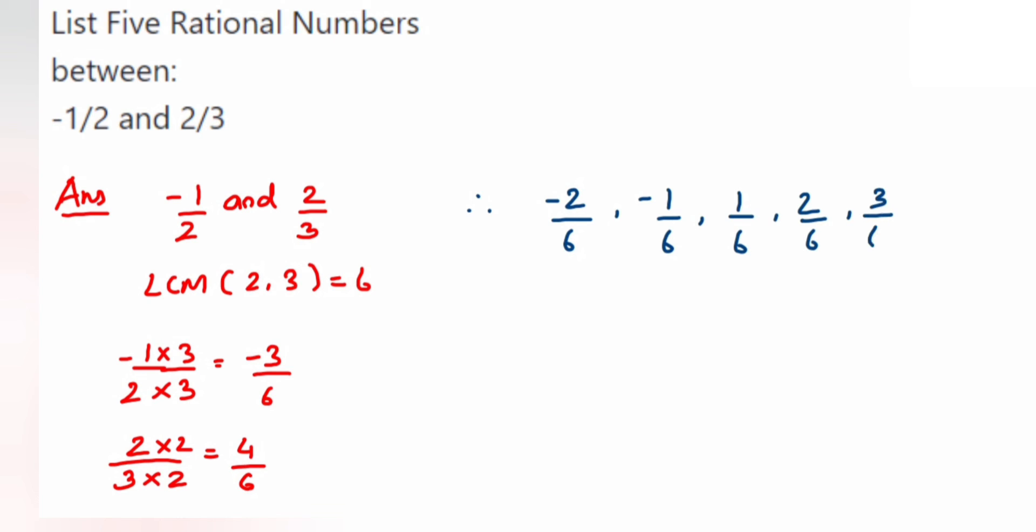These are 5 rational numbers between -1/2 and 2/3. That's it, we got the solution. I hope you have understood this.